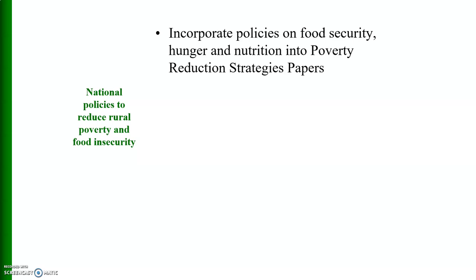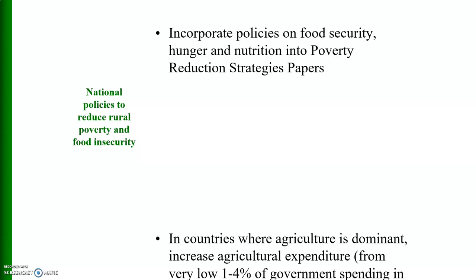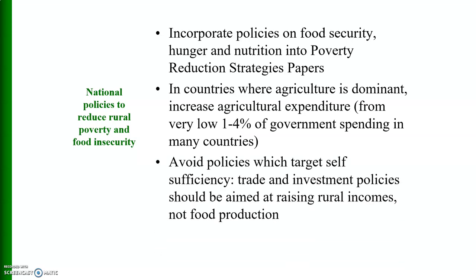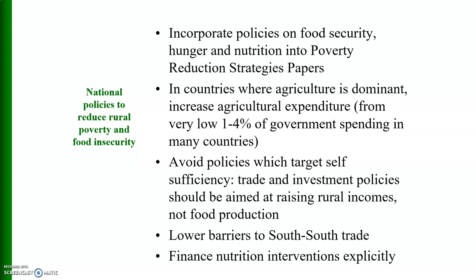We need to incorporate policies on food security, hunger and nutrition into poverty reduction strategy papers, which were not included previously. In countries where agriculture is dominant, agricultural expenditure should be increased from the very low 1 to 4% of government spending seen in many countries. Trade and investment policy should avoid targeting self-sufficiency and instead aim at raising rural incomes, not just food production. There should also be lower barriers to south-to-south trade and explicit financing of nutrition interventions.